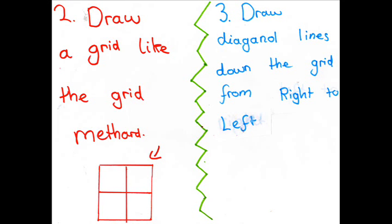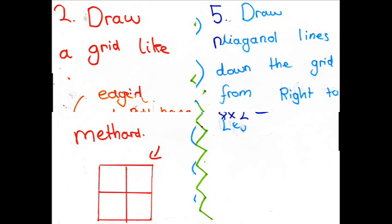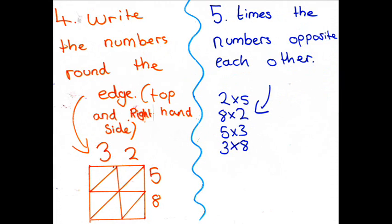2 x 9 is 18. 2 x 10 is 20. 2 x 11 is 22. 2 x 12 is 24. All right.